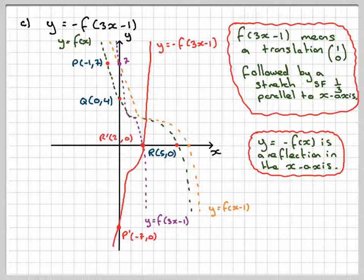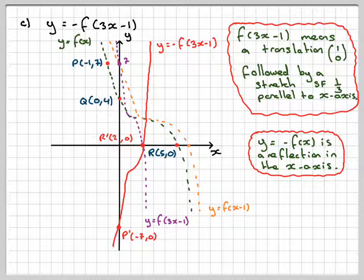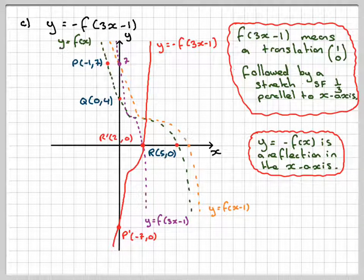This has been a video to show you how to, given a graph y equals f of x, that you can find the absolute value function, f of the absolute value function, and then do a combination of transformations. I hope you've understood, and I thank you very much for watching.